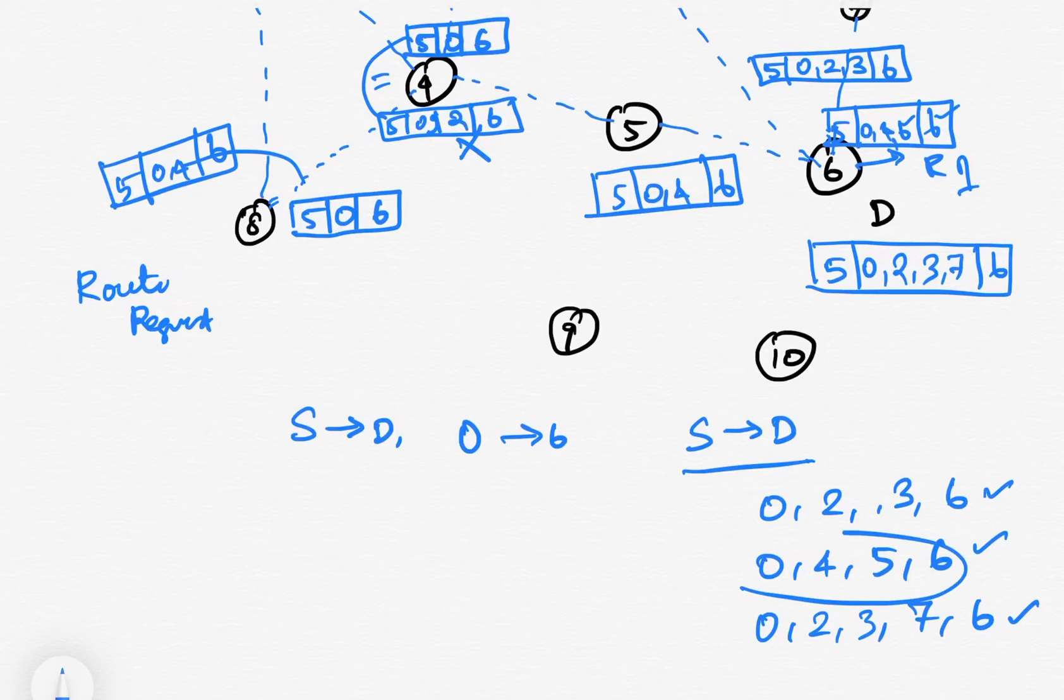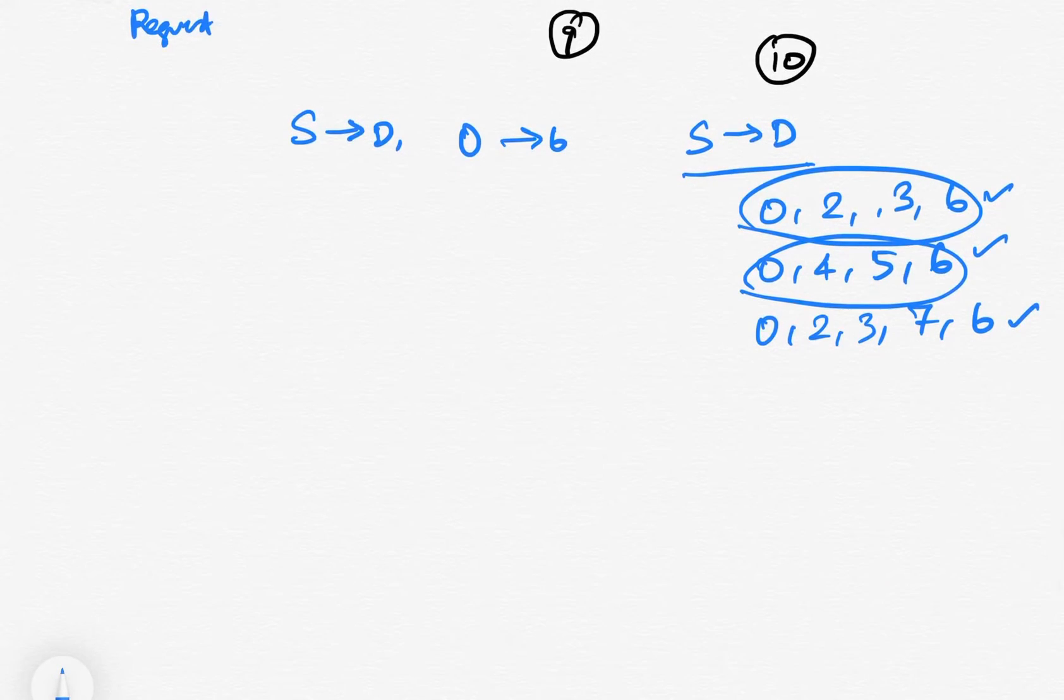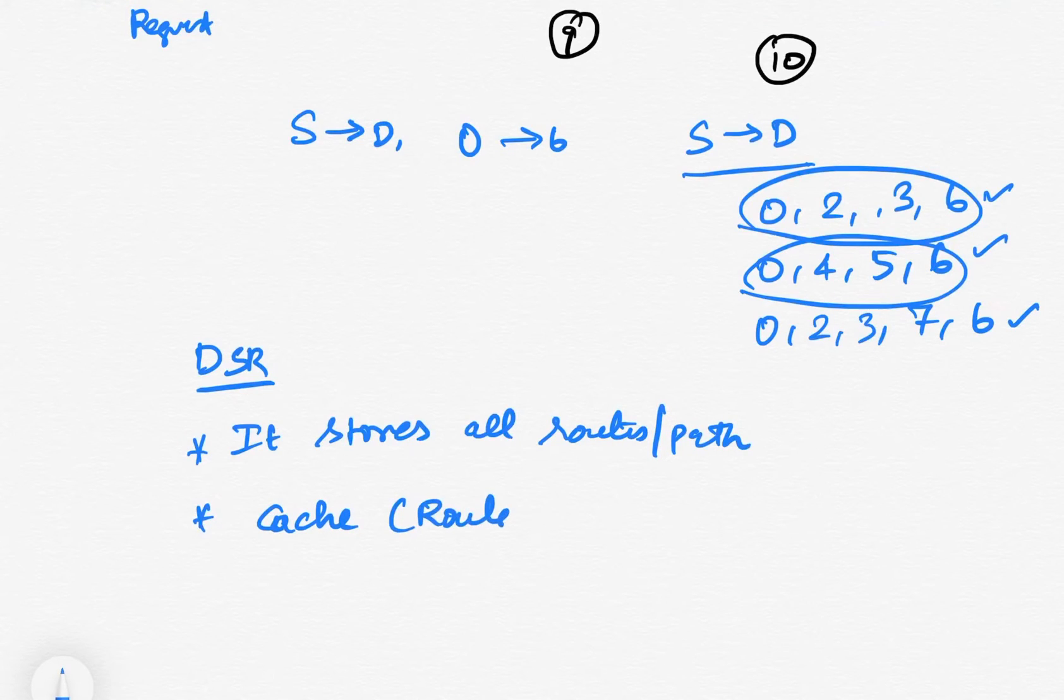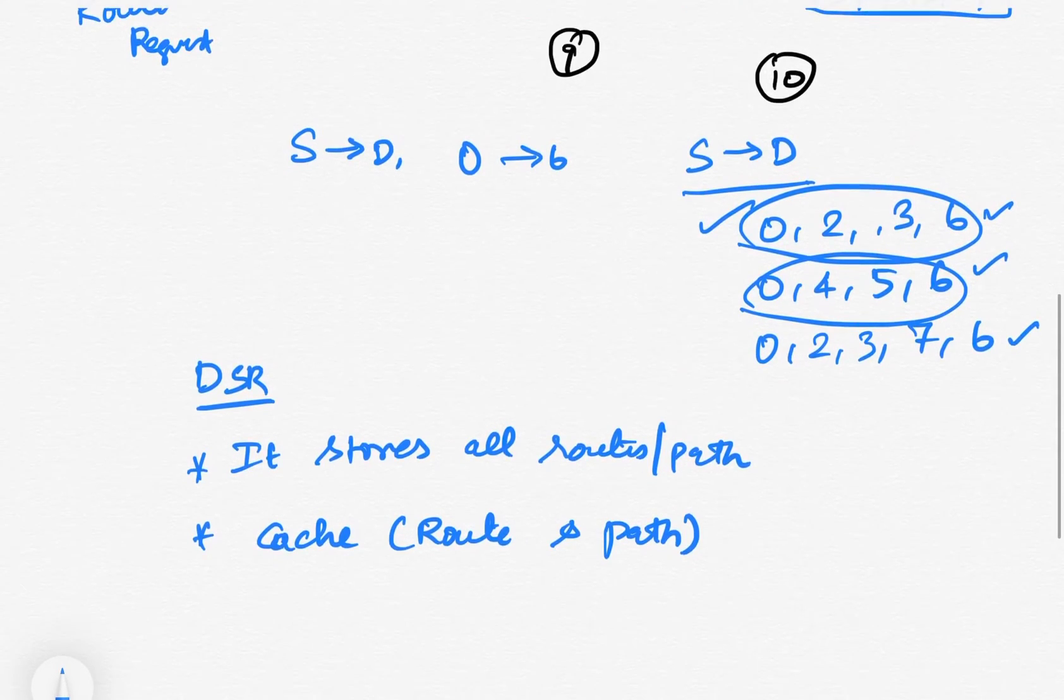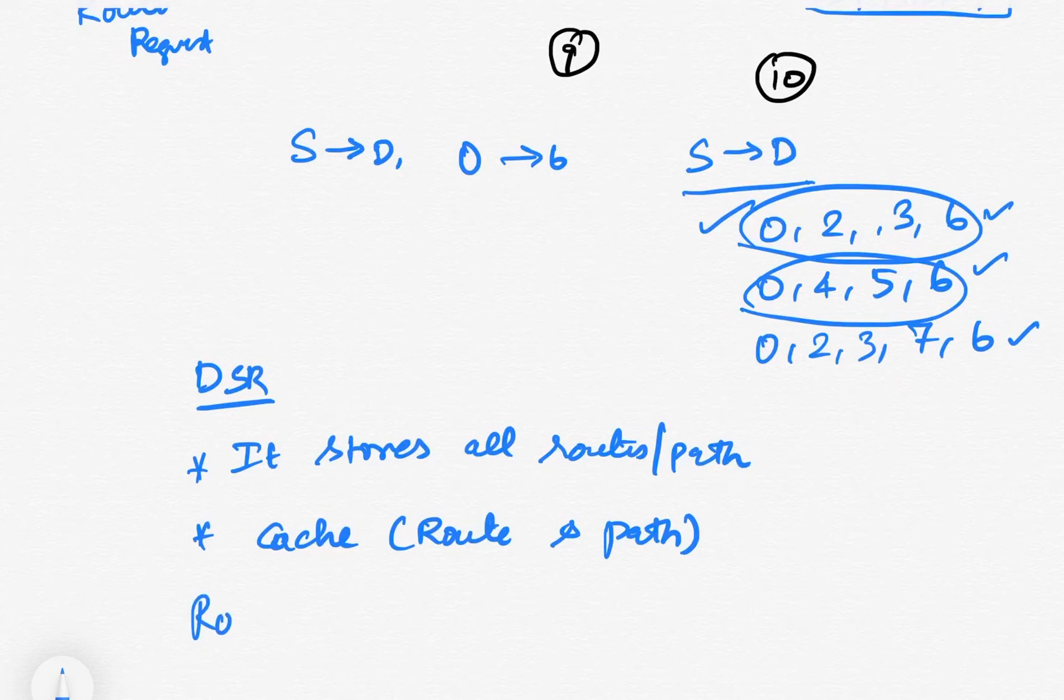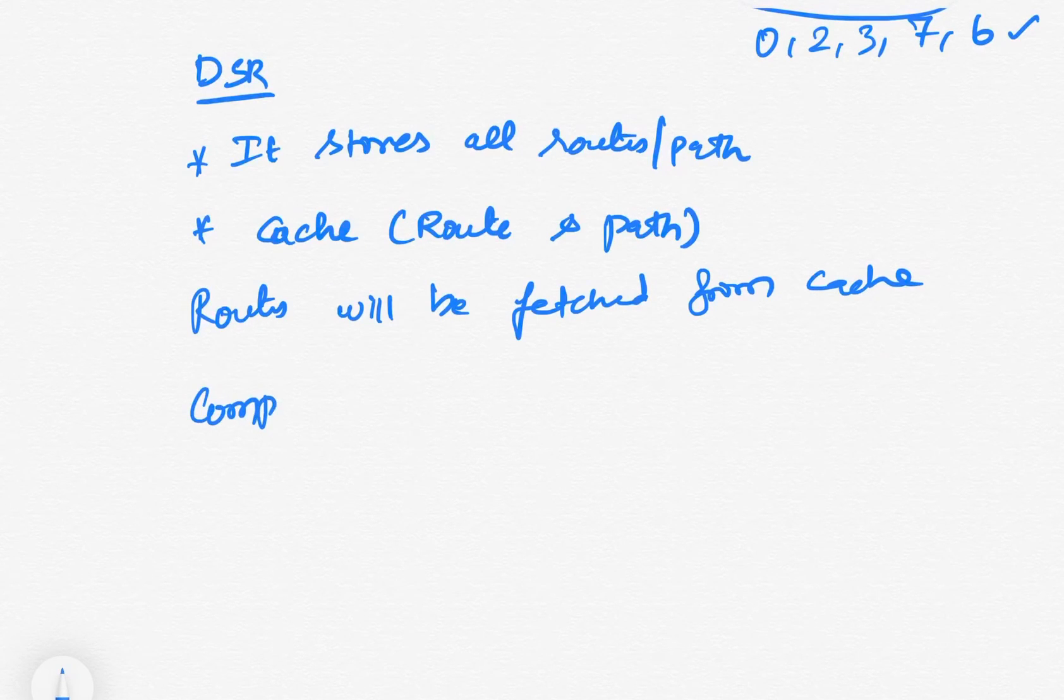Either this route will be fixed or that route will be fixed. But in DSR, it stores all routes or paths in cache memory called route cache and path cache. If node 5 moves away from node 4 to 6, the link between 4 and 6 will be broken, and it will alternatively take a second route. Routes will always be fetched from the cache. This is why DSR is so complex and complicated, but it is a powerful protocol.